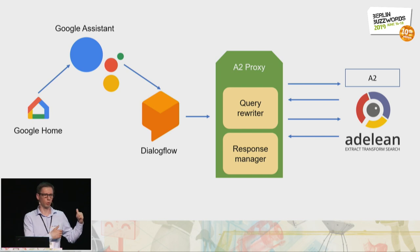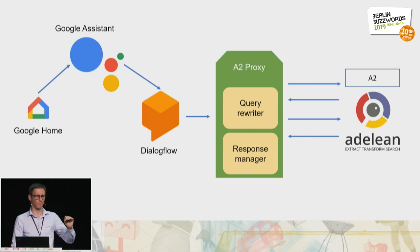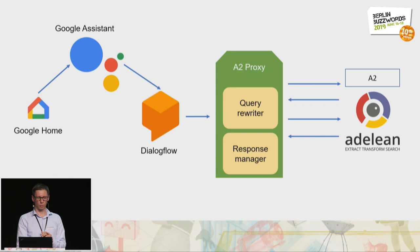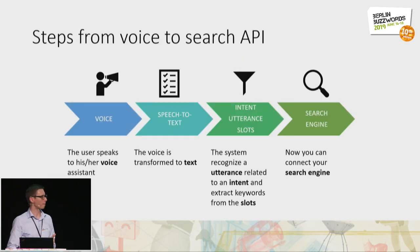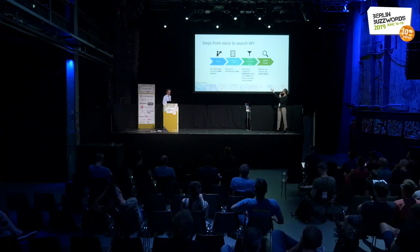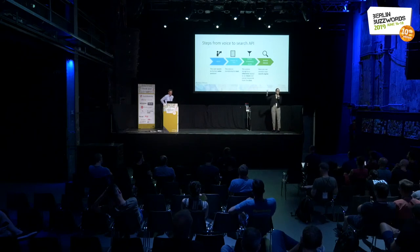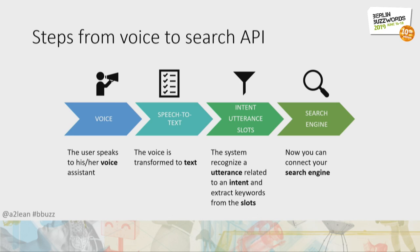To integrate your search engine — in this example we built one called A2 — the device like Google Home calls the voice assistant, which goes through Dialogue Flow, and then you need a piece of software — a green adapter called A2 proxy — that adapts the calls to your search engine. You can plug in any search engine, but as you will see, you also have to adapt if you want something relevant. To conclude: the user speaks, voice is transformed to text via speech-to-text, then the intent, utterance, and slot recognize which service to call, and then your search engine is connected.